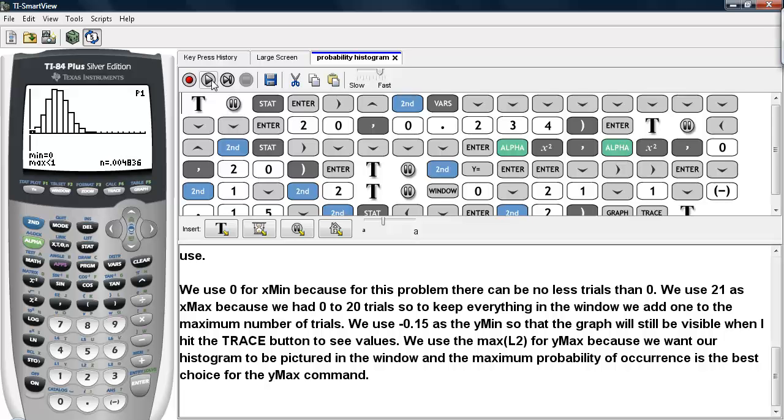We use the MAX of the L2 list for Y MAX because we want our histogram to be pictured in the window. And the maximum probability of occurrence is the best choice for the Y MAX command. And this is how you can construct a probability histogram using the calculator.